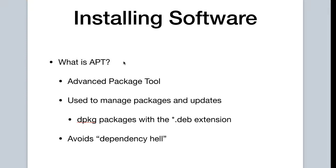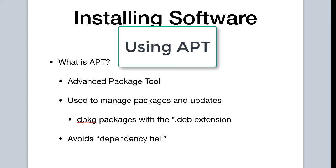When it comes to installing software, especially on Linux and in the case of Raspberry Pi, which is a Debian-based distribution, thankfully we have a convenient tool that makes managing software easy. It's called the APT package system.